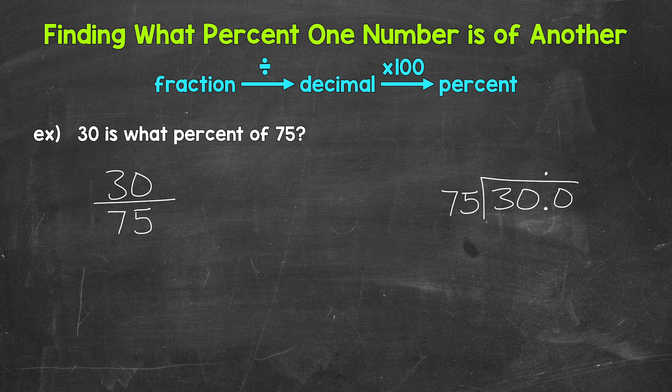And now we can think of this as 300 divided by 75. So how many groups of 75 in 300? How many 75s in 300? Well, four. That gets us to 300 exactly.